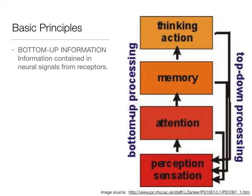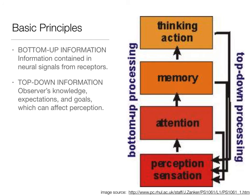However, not all of our processing happens that way. We can have bottom-up processing, and a lot of times that's what happens. But what we think, our memory, our attention - all of that can affect our perception of that sensation. That's what we call top-down processing, where our knowledge, expectations, and goals can affect perception.